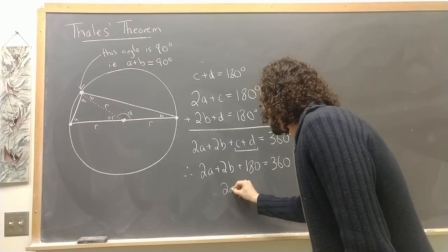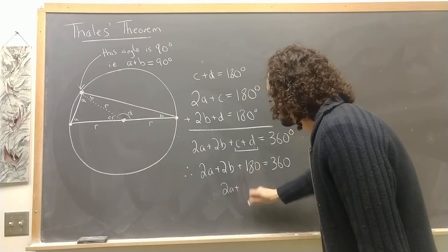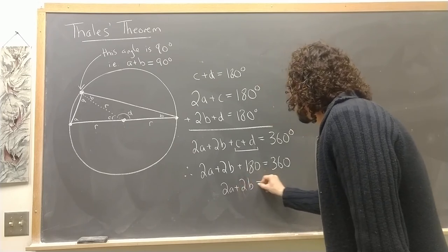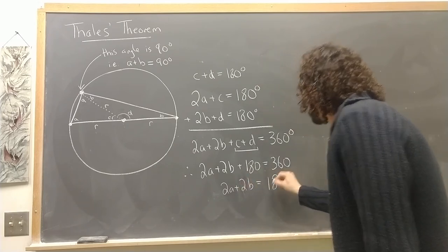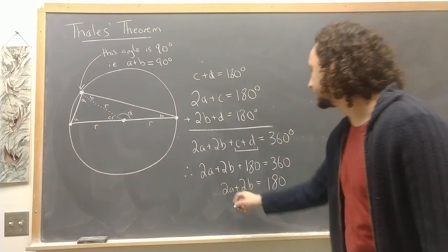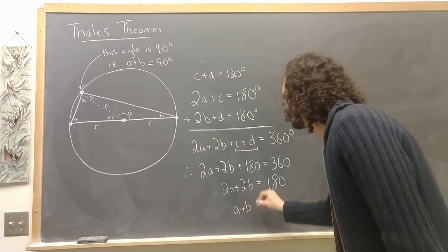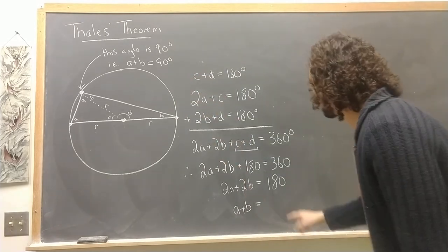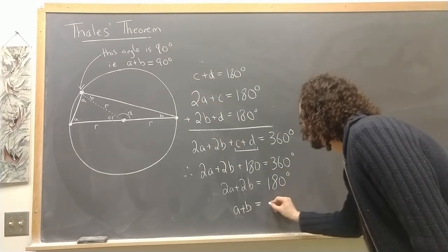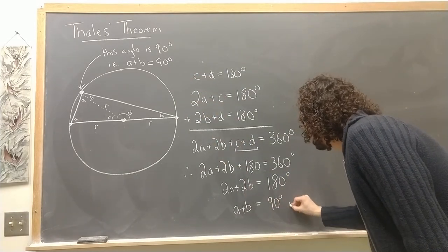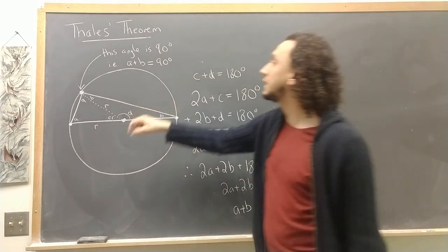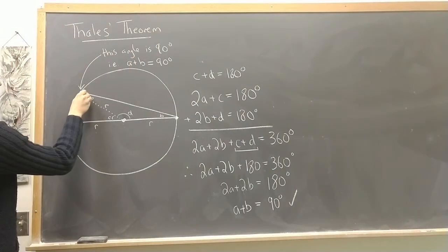Which means 2A plus 2B equals 180, subtracting 180 from both sides. And now dividing both sides by 2, A plus B, which is the angle I'm trying to figure out, equals 180 divided by 2, 90 degrees. That means this here is a right angle triangle.